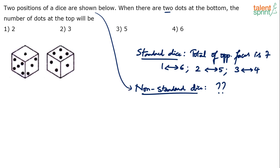The bottom face is two — what will be the face on top? It's really easy to answer. First of all, the answer cannot be two. If anyone marked option one as the answer, that's practically a crime — when there are two dots at the bottom, how can the top also be two? There won't be two faces with two dots. So two is ruled out — it's an impossible answer.